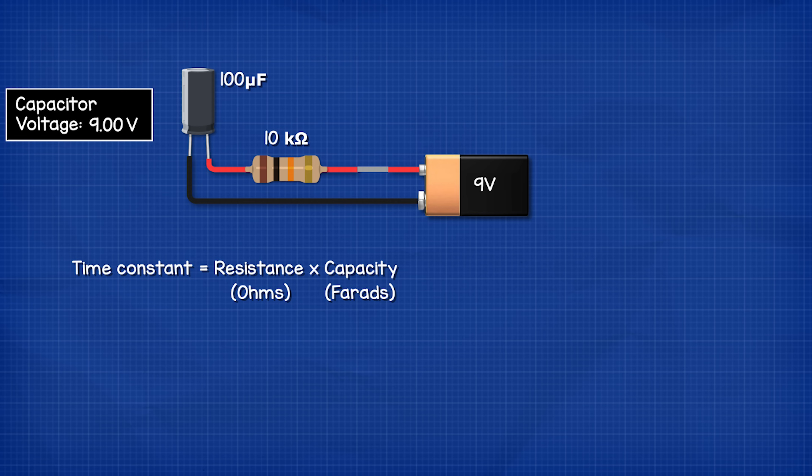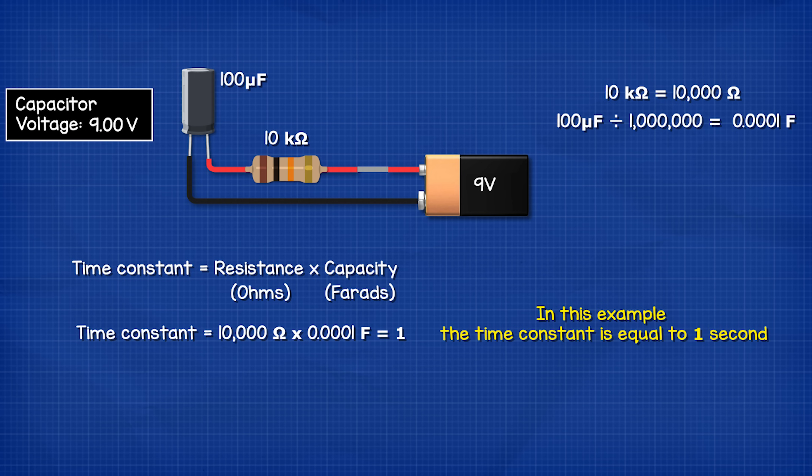So we convert our resistor to ohms and our capacitor value to farads and we see that 10,000 ohms multiplied by 0.0001 farads equals one. So in this example the time constant is equal to one second. Therefore five of these is five seconds. Meaning it takes five seconds for the capacitor to fully charge to nine volts.